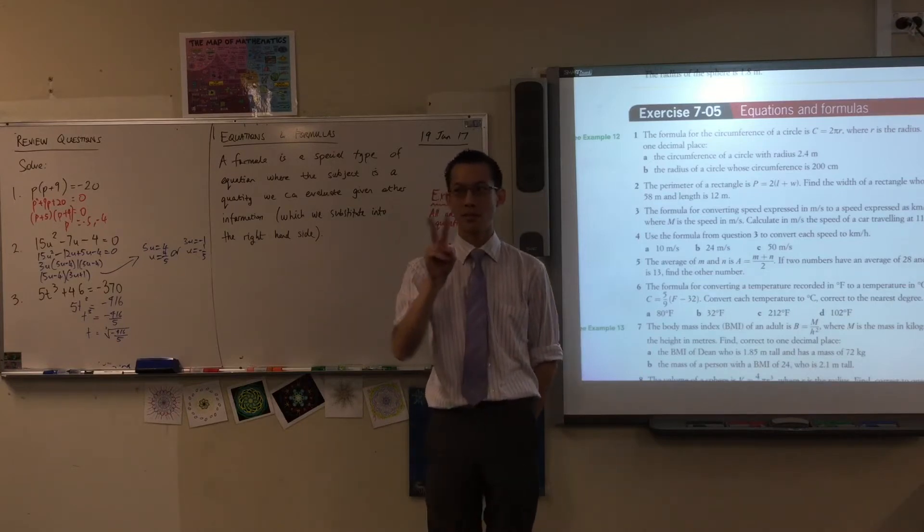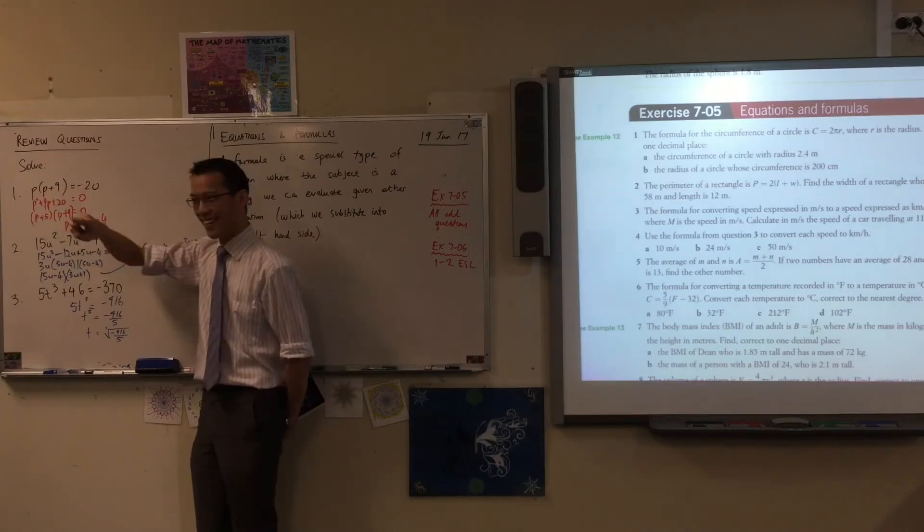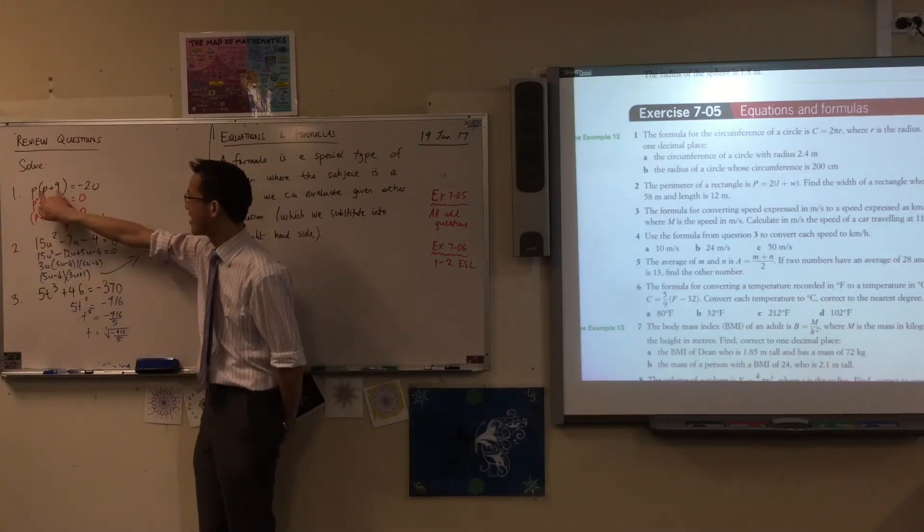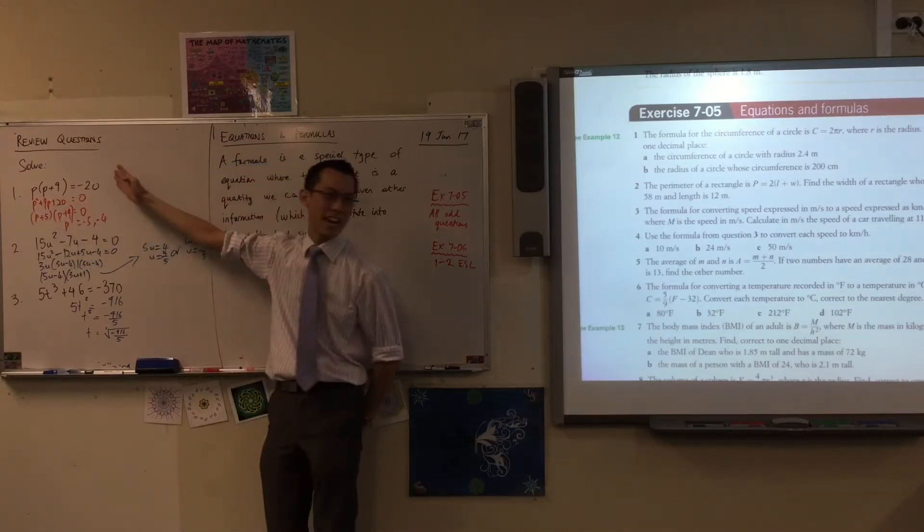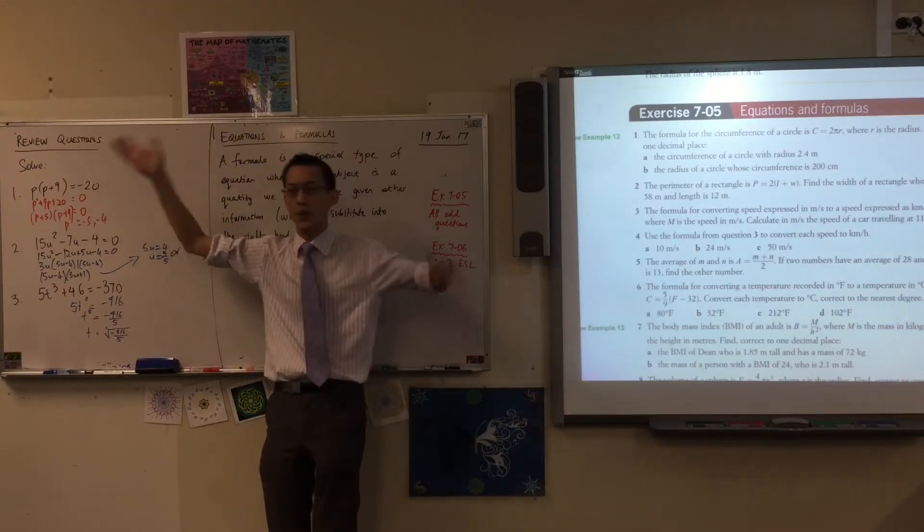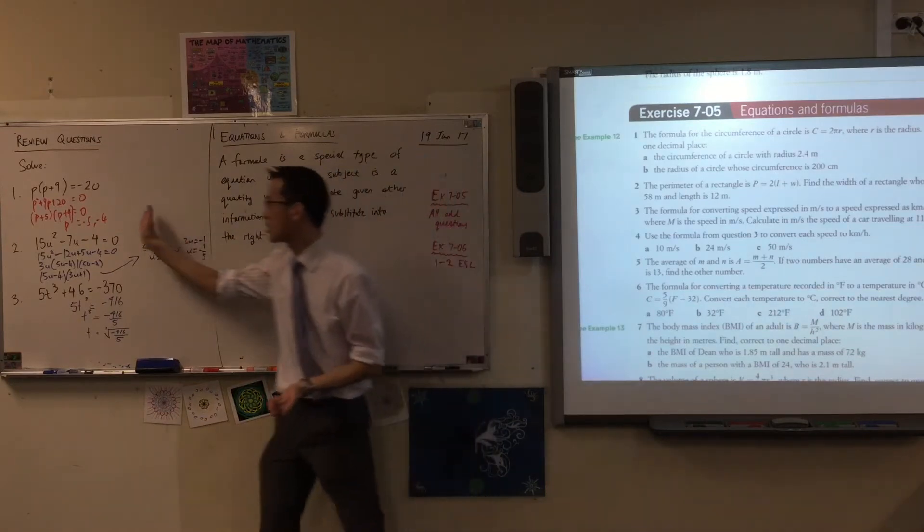Ari, do you want to tell me the first thing? It's expanded and then P plus 9 negative 20. P times P plus 9 has been expanded here, but then the right-hand side having that negative 20 over there is not helpful, so we add 20 to both sides. That makes the right-hand side 0 and everything else is on the left.